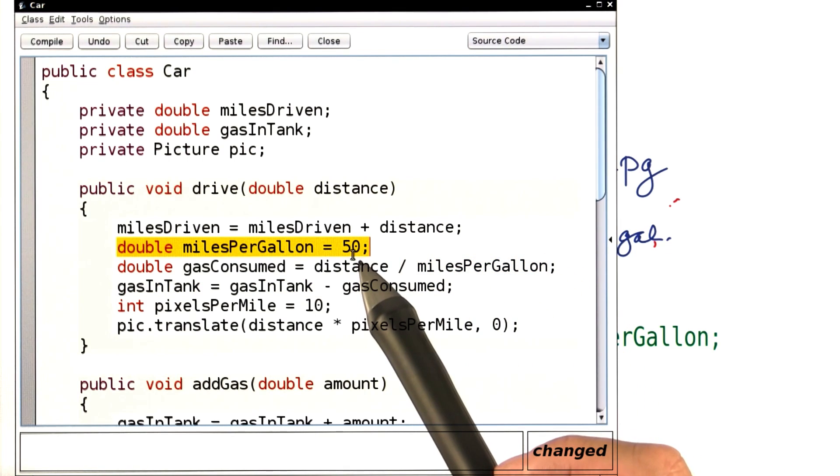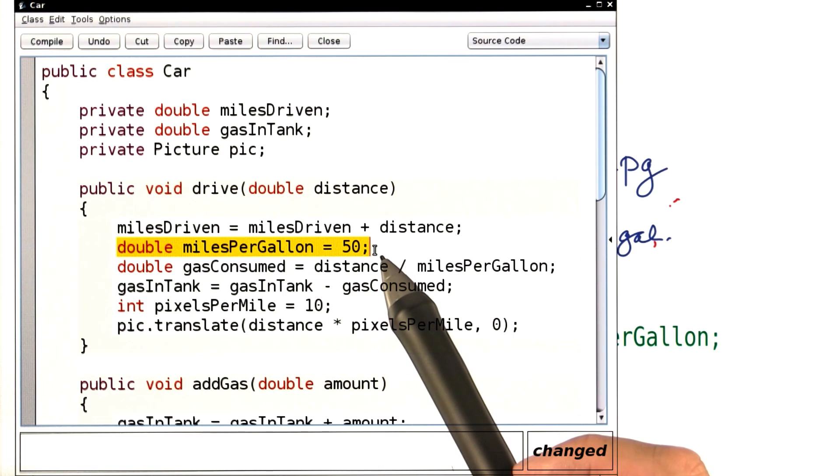For now, we'll just use the value of 50 miles per gallon. We'll later see how we can make every car have its own fuel efficiency.